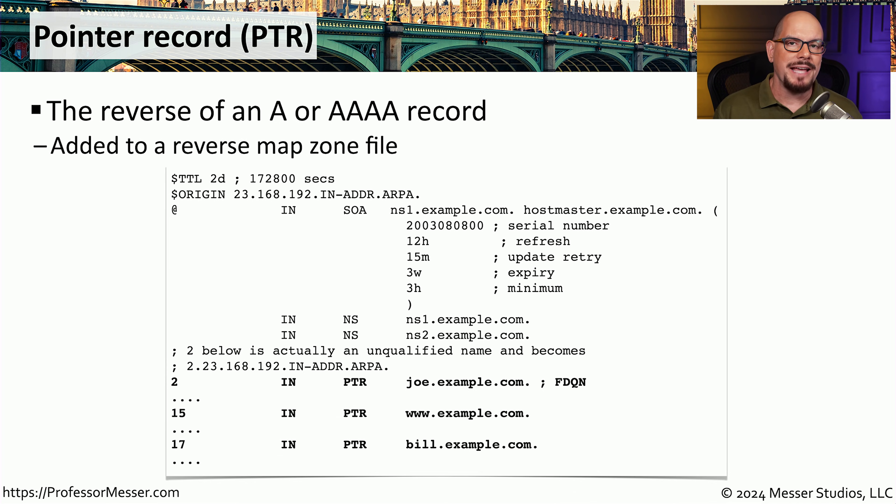And the last record we'll look at is a pointer record, or PTR. Whenever we're performing a query to a domain server, we're usually asking it for the IP address associated with a fully qualified domain name. For example, we'll tell the name server that we'd like the IP address for www.professormesser.com. But you can also perform the reverse lookup where you're asking the DNS server to provide you with a name by giving it an IP address. To be able to perform that reverse lookup, you need a separate record that provides that reverse information. And that record is the pointer record.